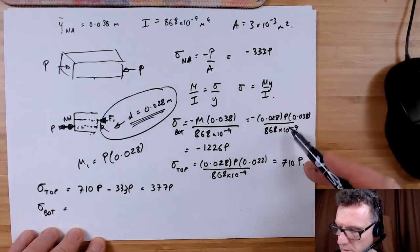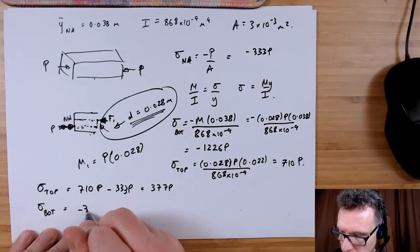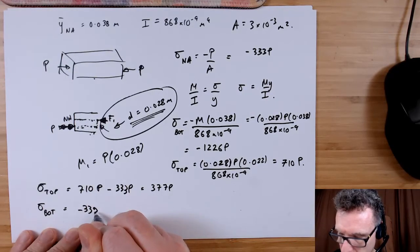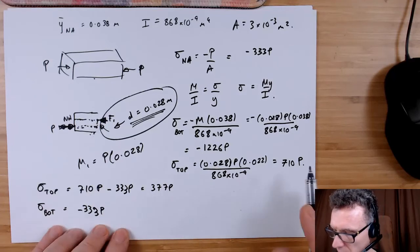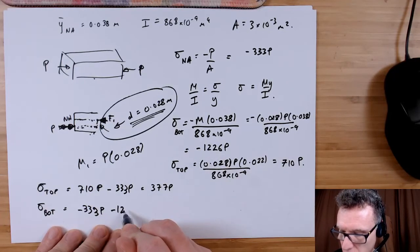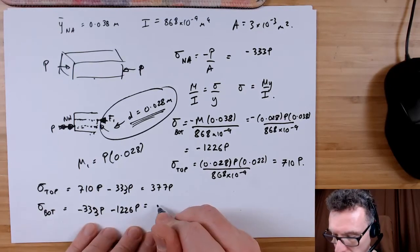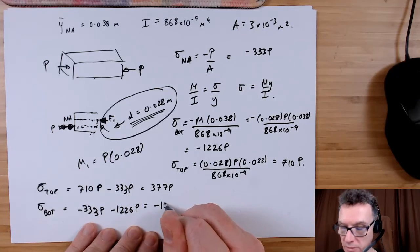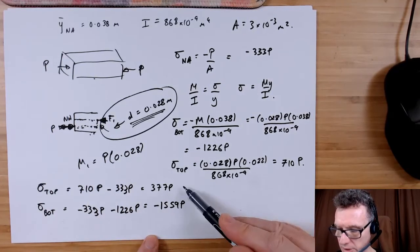Because we've got two compression stresses, so we've got minus 333 P and then at the bottom minus 1226 P.